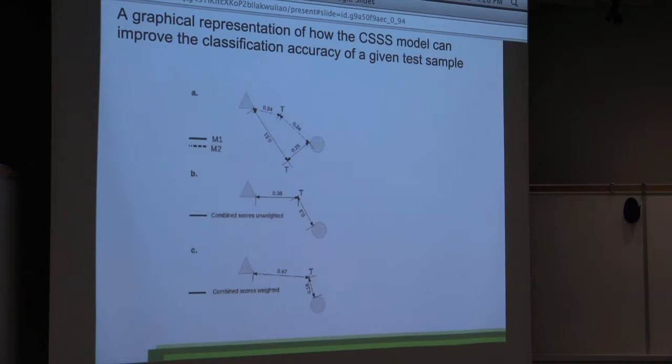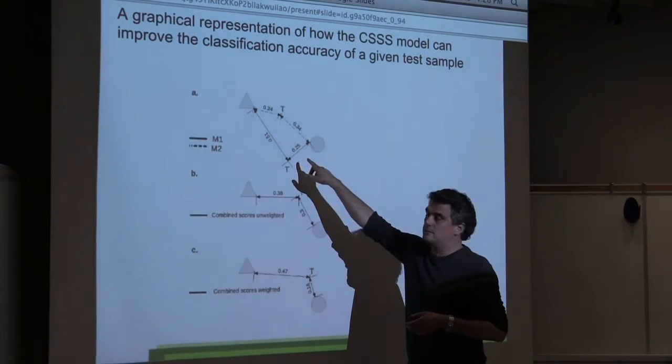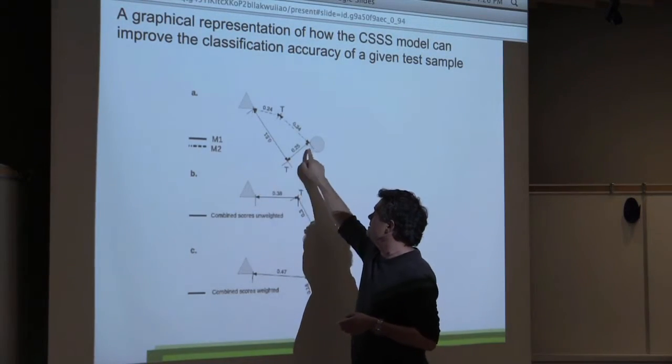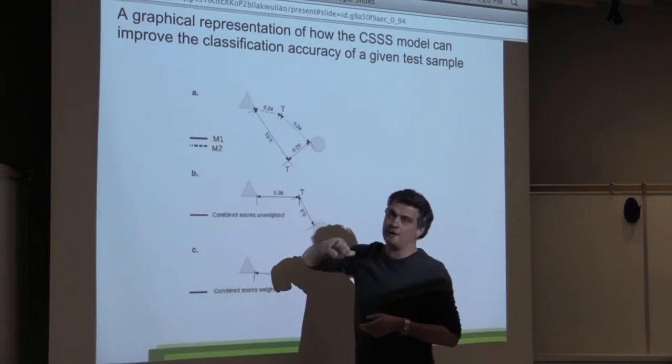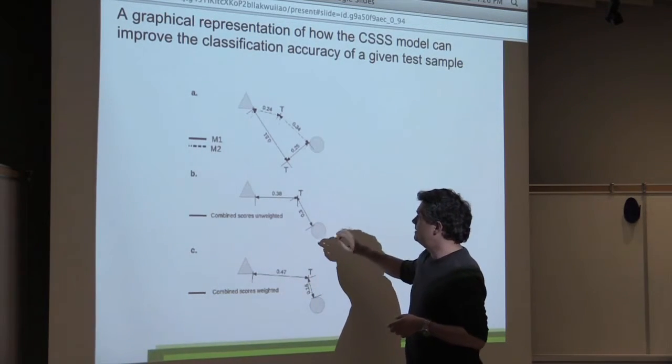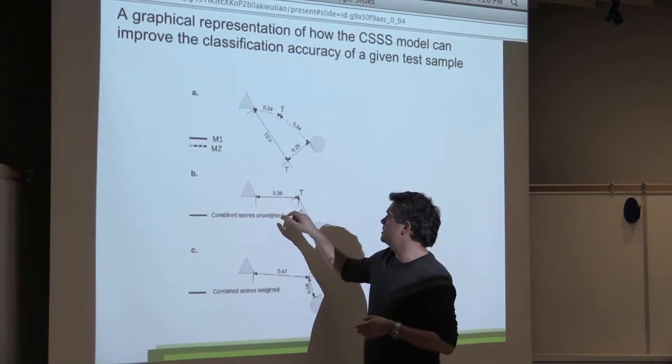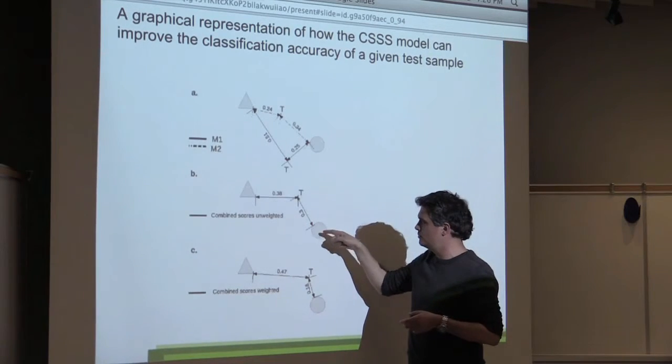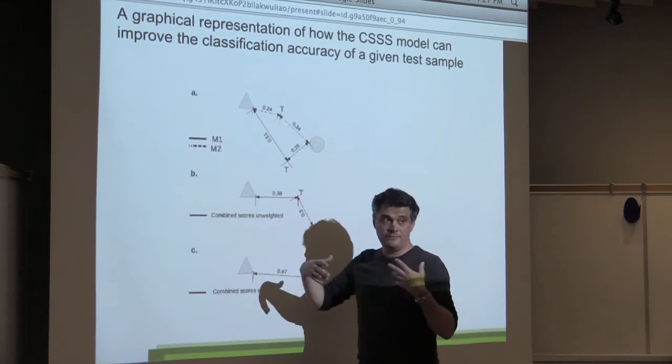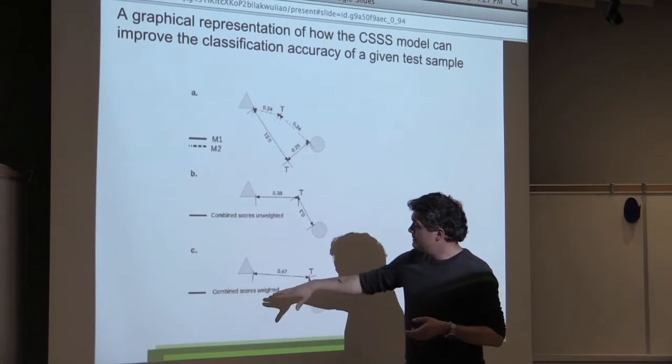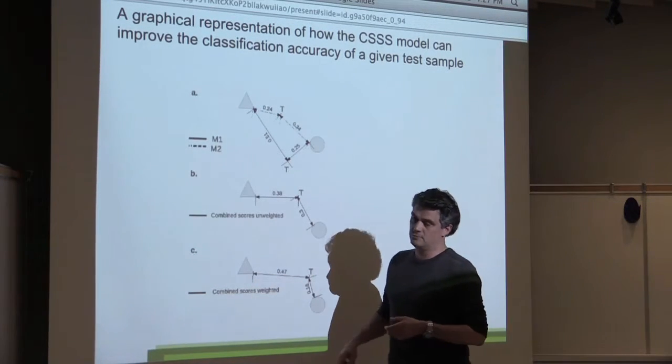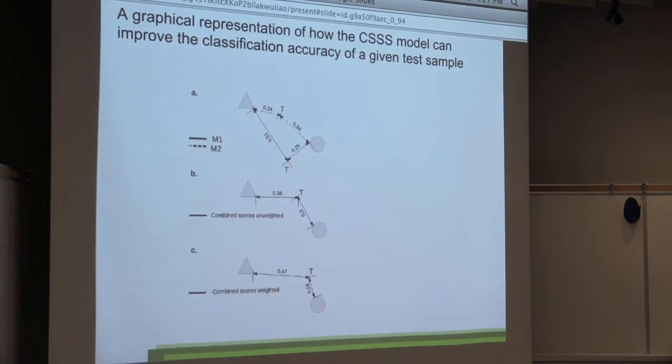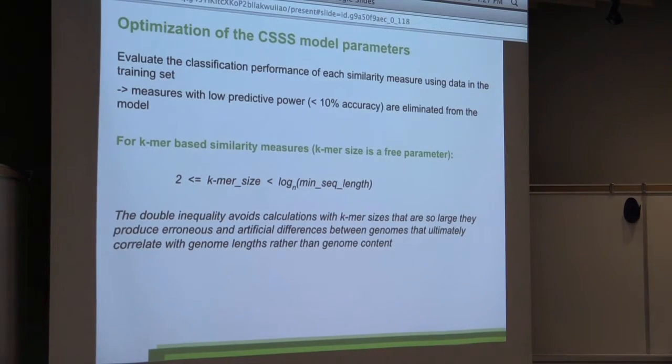Okay, so this is a graphical illustration of what the model does. Say we have two sequences, M1 and M2, and we have a training set here. So we know that the training set belongs to the class circle. M1 says, okay, this is a circle, and M2 says this is a triangle. If you combine them together, you will find that now the M1 measure basically compensates for the M2 because it brings this T closer to the true class. But if you're weighting properly, that should actually bring this T even closer to its true class.